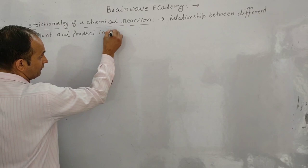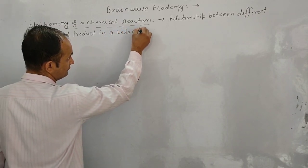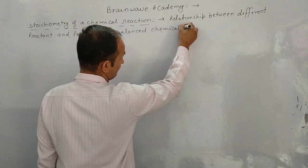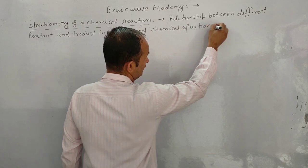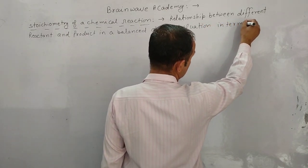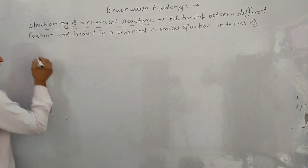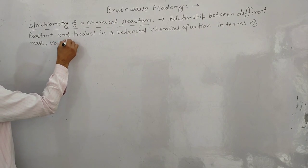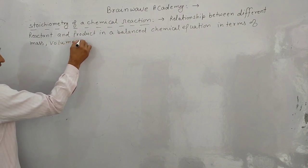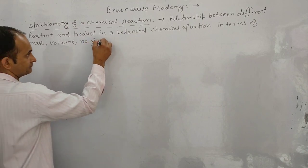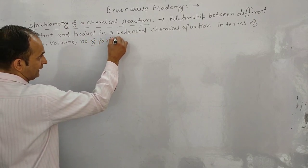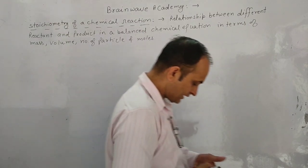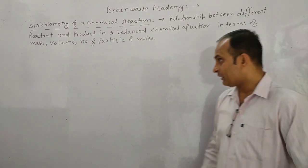In a balanced chemical equation, the relationship between number of particles and moles of reactants and products is called stoichiometry of a chemical reaction. Now we will have a question on stoichiometric calculation.